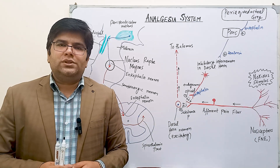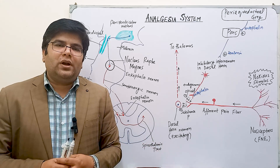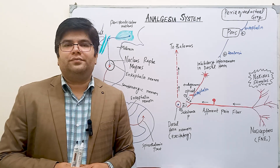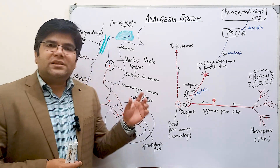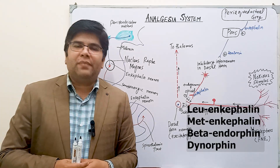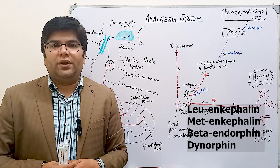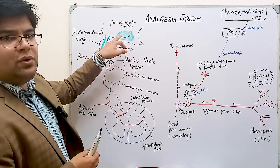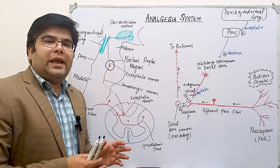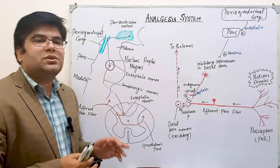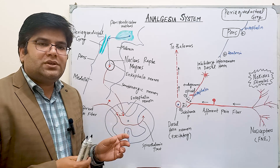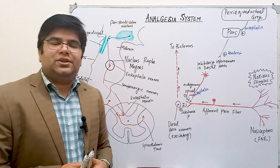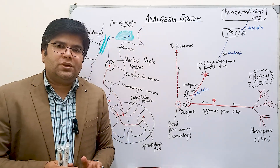Through extensive research it was found that we have about a dozen opiate-like substances in our body, called endogenous opiates, which are peptides in nature. These opiate-like molecules are derived from three larger molecules: POMC (pro-opiomelanocortin), proenkephalin, and prodynorphin. The most important endogenous opiate substances that can suppress pain are leu-enkephalin, met-enkephalin, beta-endorphin, and dynorphin. Enkephalin is released by neurons in the periventricular nucleus, periaqueductal gray matter, and the dorsal gray horn of the spinal cord. Wherever enkephalin is released, dynorphin is also released but in minute quantities. Beta-endorphin is released in the hypothalamus and pituitary glands.